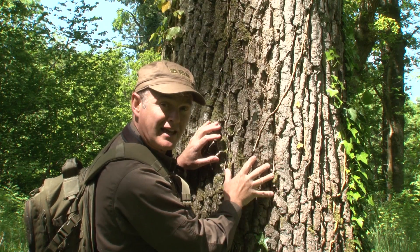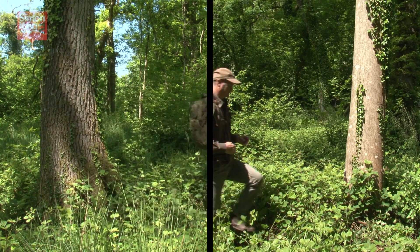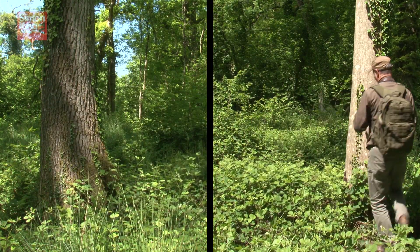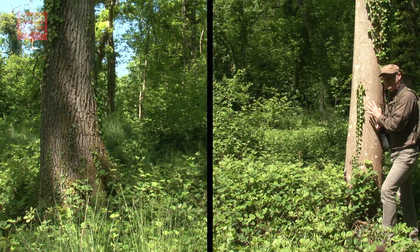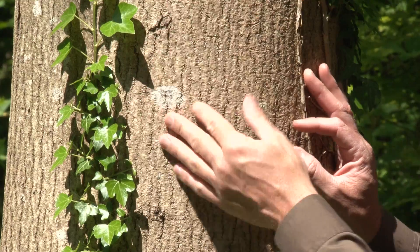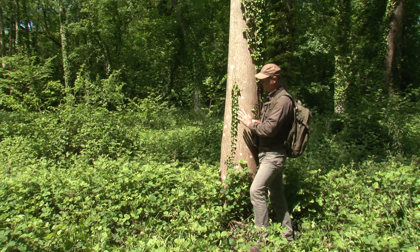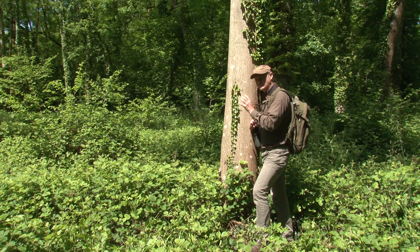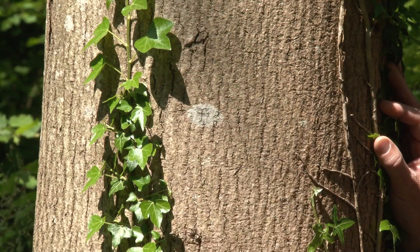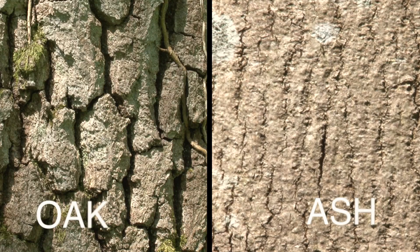Compare this to the bark of an ash tree. The bark of a mature ash tree tends to be a sort of beige colour compared to the grey of the oak, but the most striking difference between them is that in all but the very oldest of ash trees it is much, much smoother — none of those great deep fissures and cracks that you see in the oak.